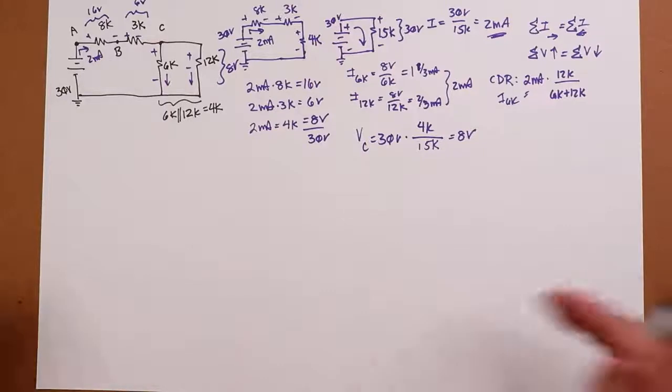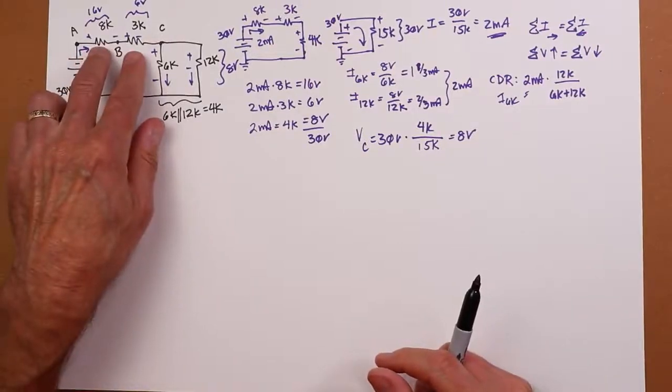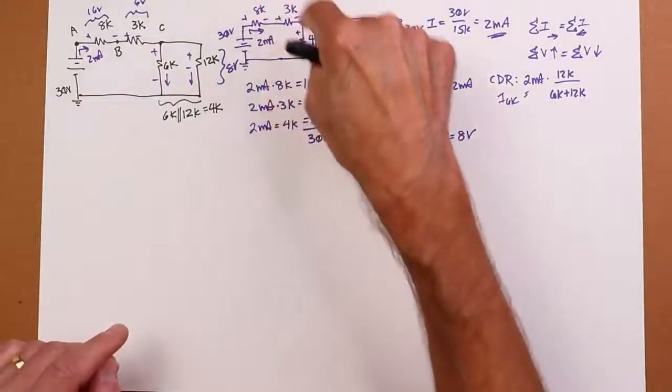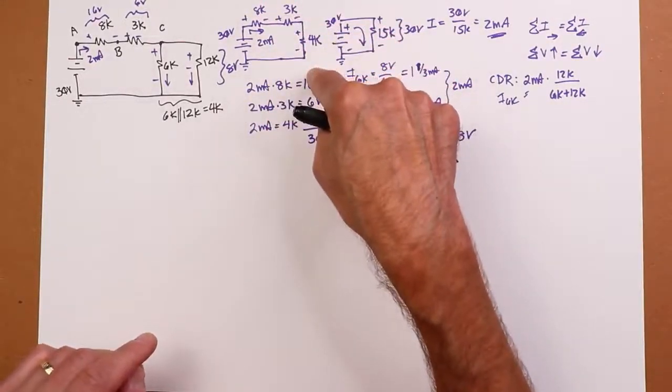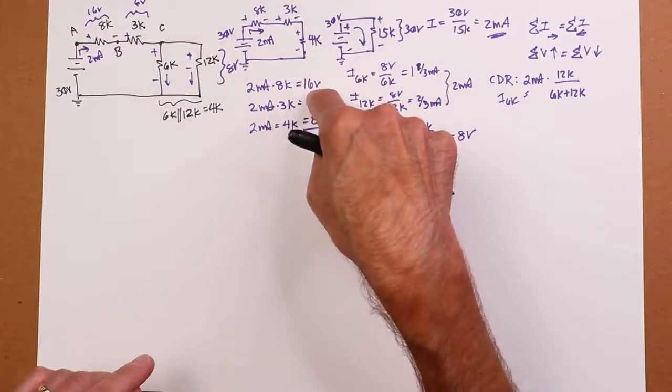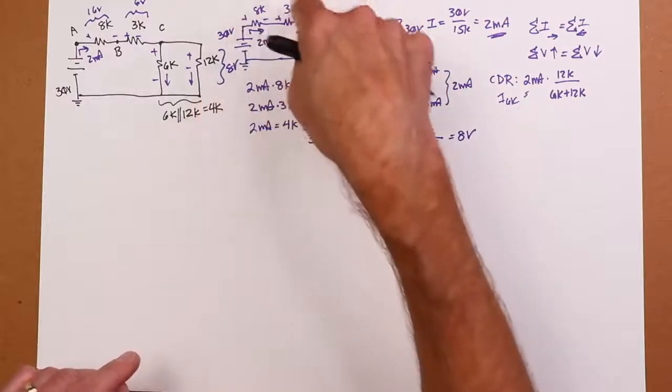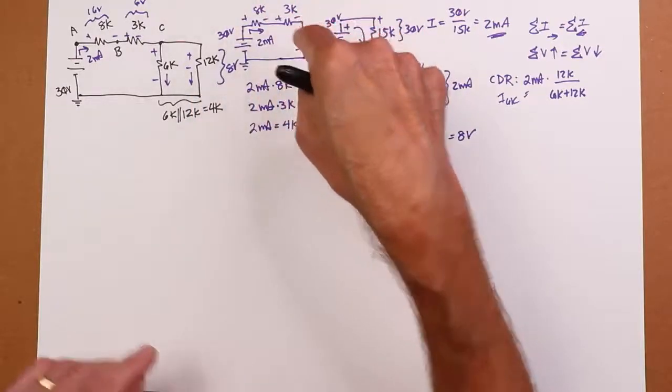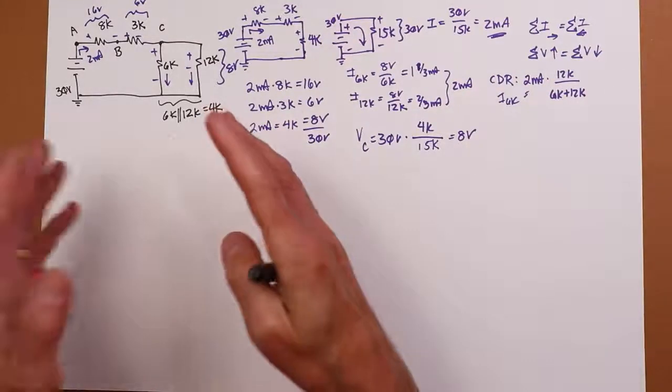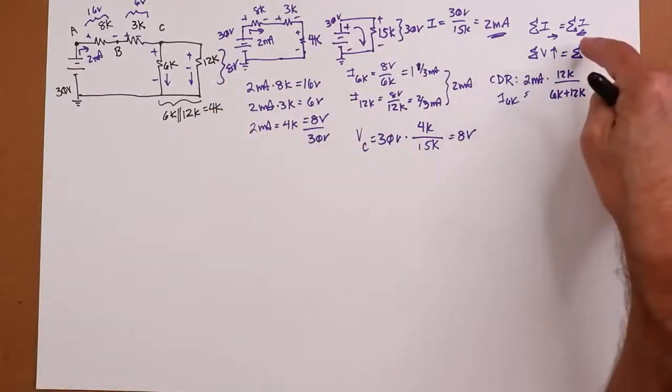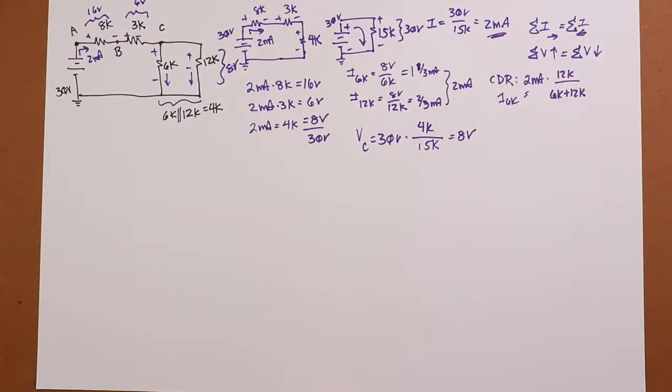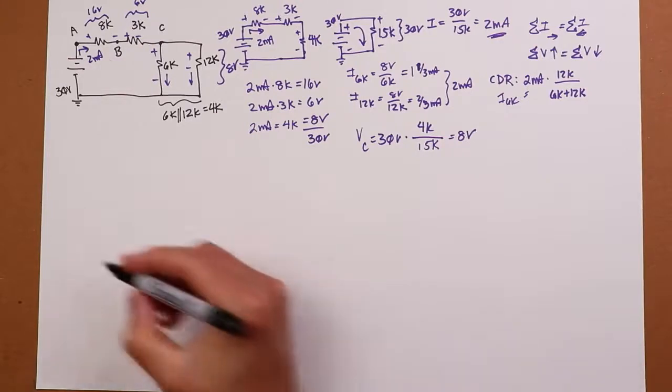But when you start these, just look for the things that are obvious. Like you say, yeah, those two things are in series. So I could have done this a little bit differently. I could have said, well, that's 11K and 4K. And then I'll do a voltage divider between an 11 and a 4. So I'll do 11 over 15 times 30 volts, and that'll give me the voltage across that pair. It's not right or wrong. You know, as long as you follow the rules, KVL, KCL, use things like Ohm's Law and the current divider rule, you'll be okay. All right, let's take a look at a different one.